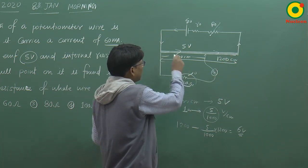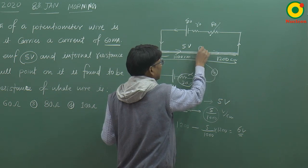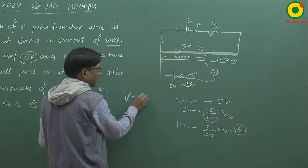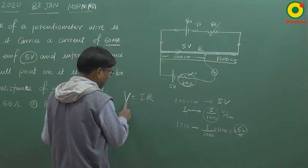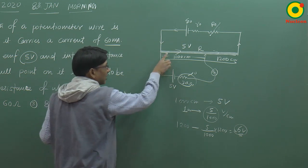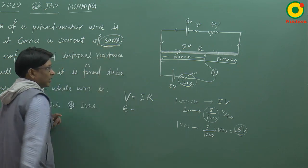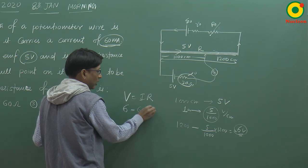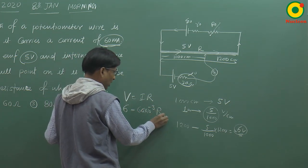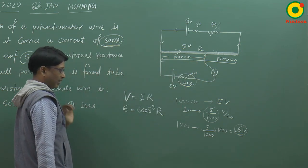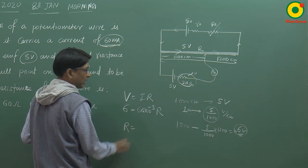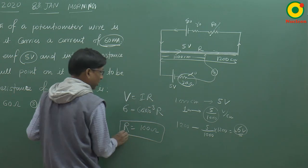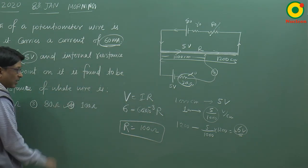अब यहां पर मान लेता हूँ कि जो potentiometer wire है, इसका resistance है R। और यहां पर potential difference है इतना। हमें पता है कि potential difference = I × R होता है। Potential difference है 6 volt, current यहां का बताया गया है 60 milliampere — potentiometer wire से 60 milliampere current flow कर रहा है। तो: 6 = 60 × 10⁻³ × R। R क्या है — इसका resistance है पूरे wire का। तो पूरे wire का resistance आजाएगा 100 ohm।